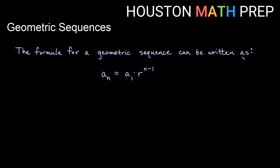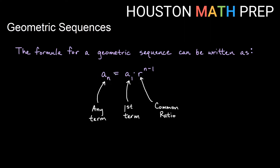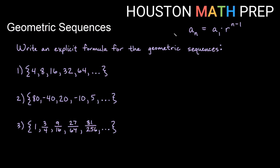A formula for a geometric sequence can be written like this: a sub n equals a1 times r to the n minus 1. The basic anatomy of that formula is that any term is equal to the first term times the common ratio raised to the n minus 1 power. That n minus 1 is very similar to what we had in the arithmetic sequence formula — it's the number of steps between the first term and the nth term. Let's get some practice writing an explicit formula for geometric sequences.